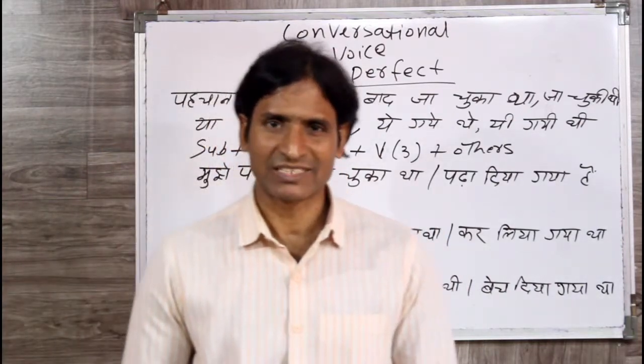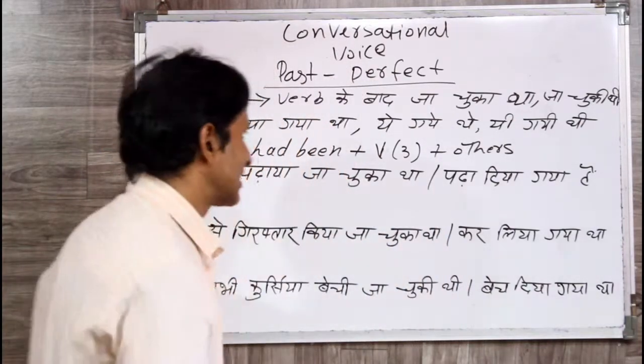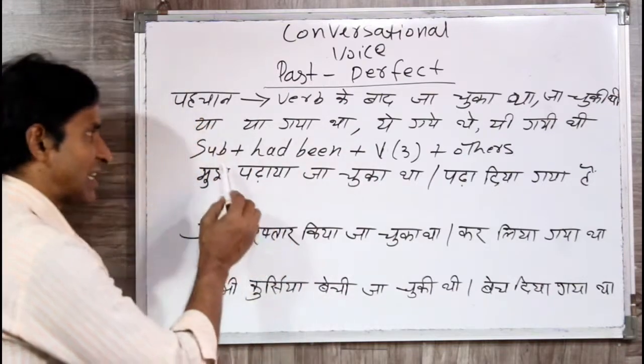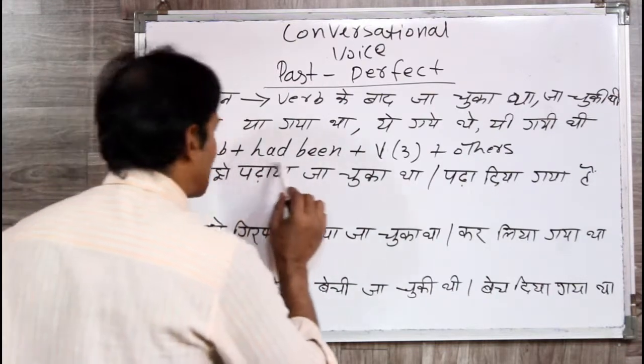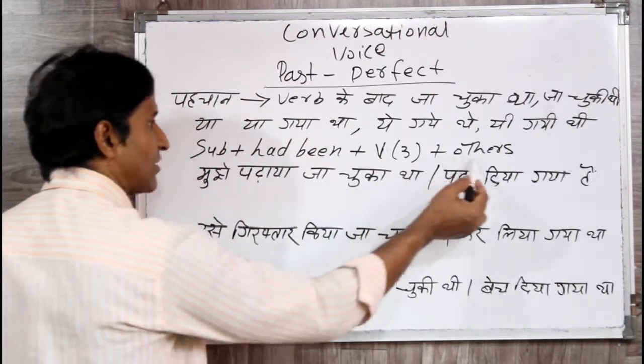Past perfect tense. So, we will be talking about the making formula: Subject + Had Been + Verb 3 + Others.